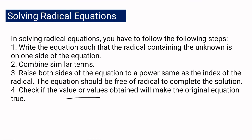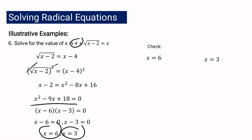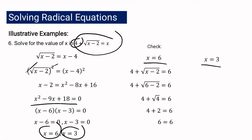Let us check each value in the original equation. For x equals 6: 6 minus 2 is 4, the square root of 4 is 2, and 4 plus 2 is 6. Both sides equal 6, so x equals 6 is correct.